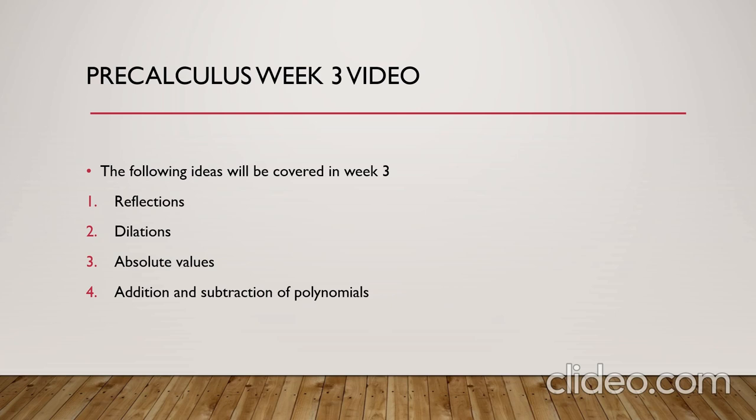The keyword for addition or subtraction of polynomials is like terms. Two terms are called like terms if they have the same variable and this variable has the same exponents. In order to add or subtract any two terms, we just add or subtract the coefficients of that term without changing the exponent of the variable that we have.